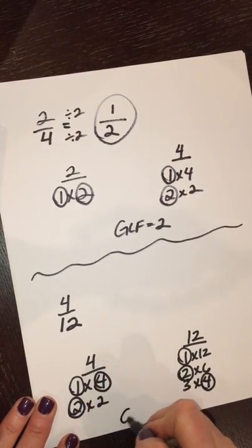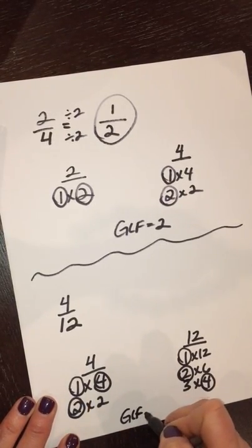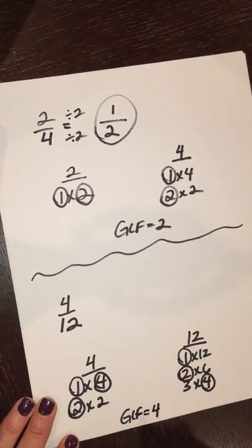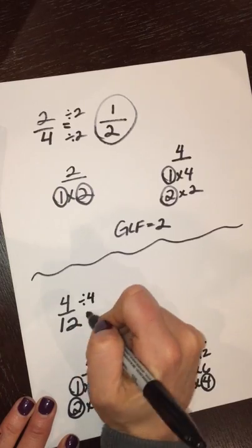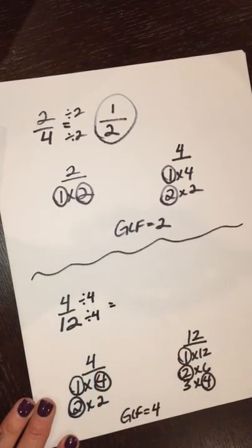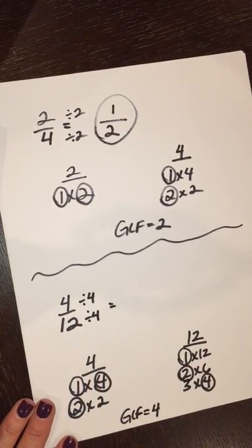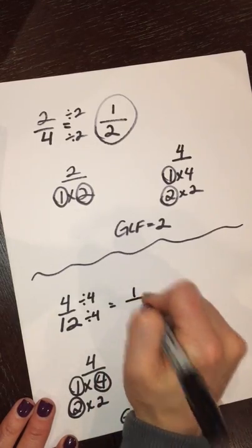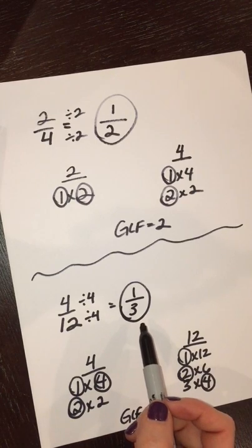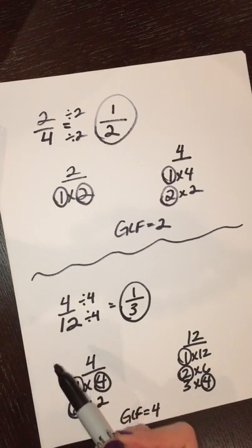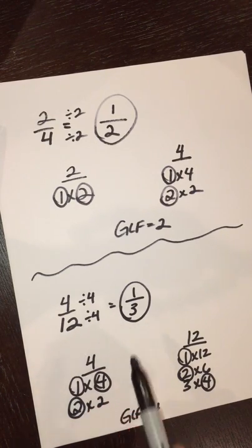And I have found that the greatest common factor is four. So I'm going to take that greatest common factor, and I'm going to divide the numerator and denominator by four. So four divided by four is one, twelve divided by four is three, one-third is the simplest form of four-twelfths. I've reduced four-twelfths to one-third.